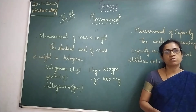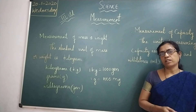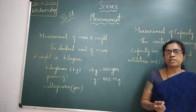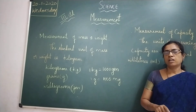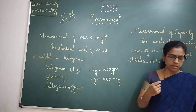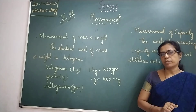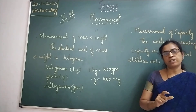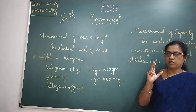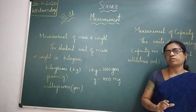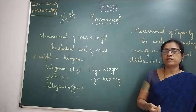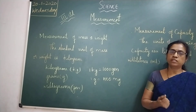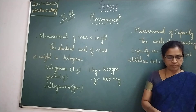Measuring cylinders and measuring cans are used to measure capacity. For example, when the milkman brings milk, the measuring cans have markings on them showing the standard measure. This ensures that the capacity is measured correctly without any mistakes. You can use those markings to measure the capacity in liters.